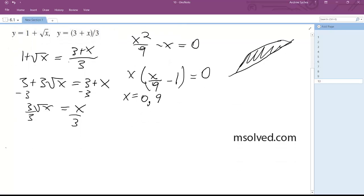Alright so what I'm going to do next is I'm going to have integral from 0 to 9 of 1 plus square root of x dx minus integral of 0 to 9 of x plus 3 over 3 dx.